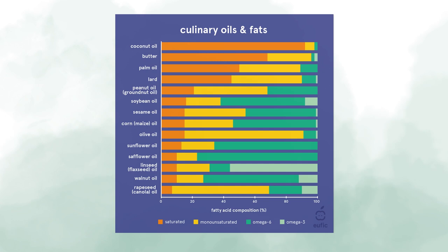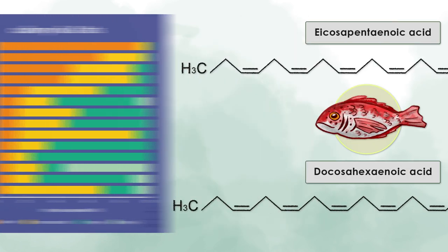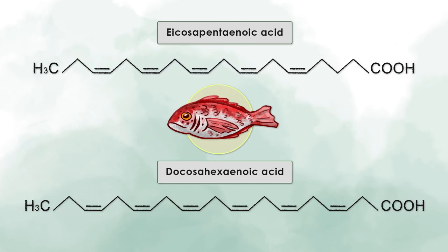Most fats and oils that are derived from plants contain high amounts of unsaturated fatty acids and are liquid when stored at room temperature. Also fat from fish such as salmon or trout are rich in omega-3 fatty acids. The most important omega-3 fatty acids from fish are called EPA and DHA and they are essential fatty acids.